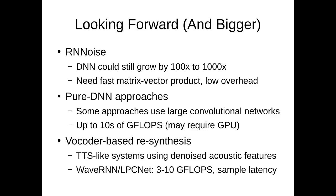In terms of pure DNN approaches, some of them are using really large convolutional networks and that involves complexity, sometimes up to the tens of gigaflops, which may even require GPUs in some cases if we want it to run in real time.